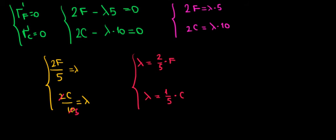Lambda equals Lambda, which means 2 over 5 times F equals 1 over 5 times C. The 5s cancel out on both sides, so 2 times F equals C. Now we'll substitute this relationship into our budget constraint.